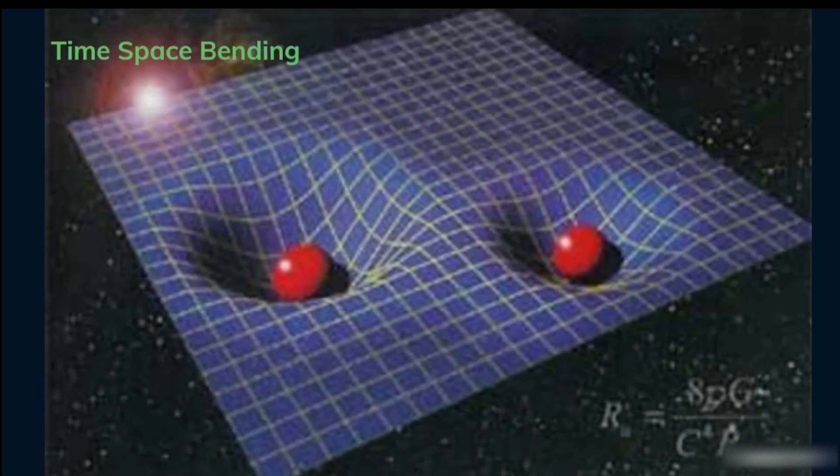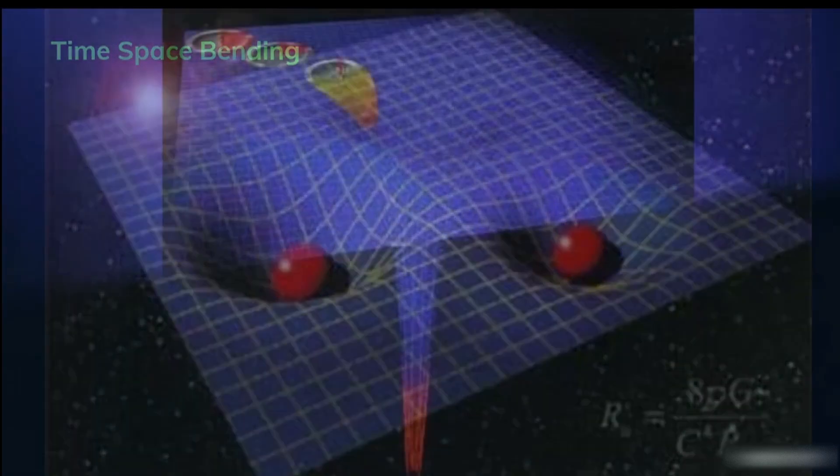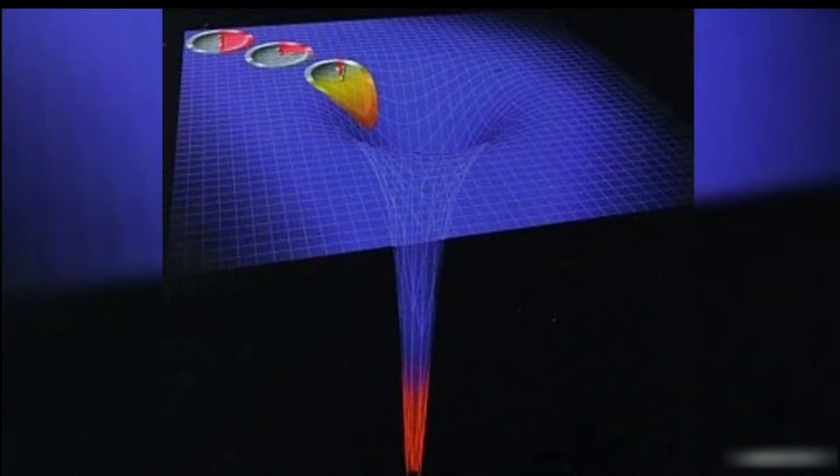The heavier an object, the more it bends space-time. Black holes bend it so much they make a hole where the singularity sits.